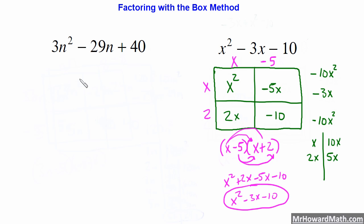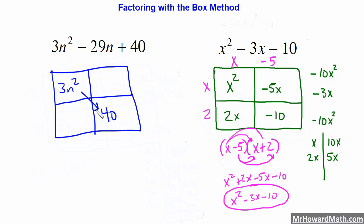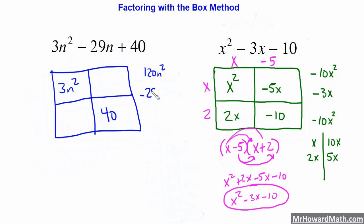For this next example we're going to do the same thing. First step: draw our box and split it into four equal pieces. Then take the N squared term — that's 3N squared — and put it in the upper left box. Take the constant term, 40, and put it in the lower right box. Then take the product of these two: that's 120N squared. Then take the middle term and put it here — that needs to be our sum when we put the two factors together. We want two things that when multiplied give us 120N squared, and when added give us negative 29N.